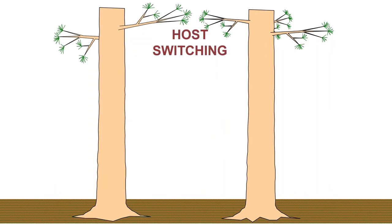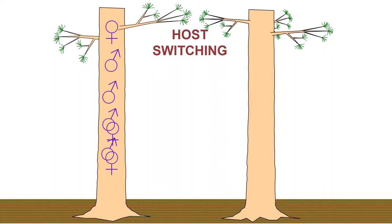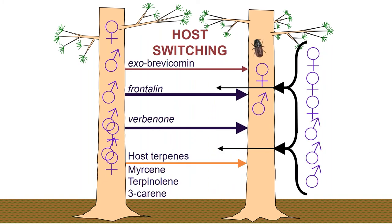Interestingly, mountain pine beetle and some other bark beetles engage in host switching as a way to regulate attack density. When a tree reaches an optimal density of attacking beetles — enough to overcome defenses but not so many that competition decreases their brood — they produce anti-aggregation pheromones to push attacks to nearby trees. This is why we see pockets of mountain pine beetle infested trees. These anti-aggregation pheromones are frontal and verbenone.